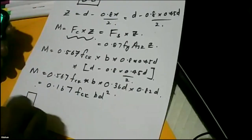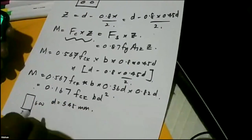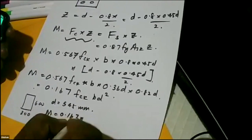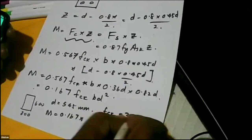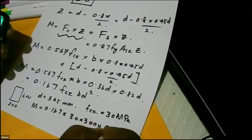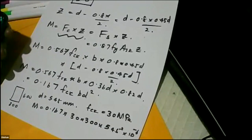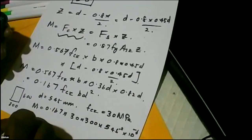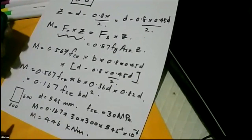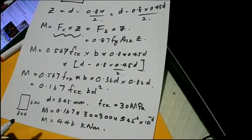So if I have a section 600 by 300, d is 545mm, then M equals 0.167 times 30 times 300 times 545 times 545 into 10 to the power minus 6, and the answer is 446 kNm. This is the maximum moment this section can carry as singly reinforced.